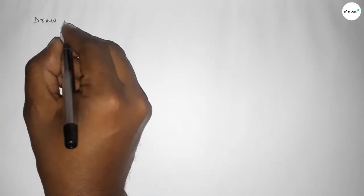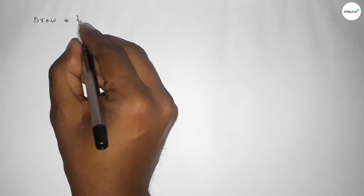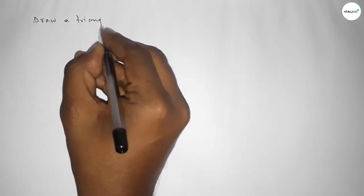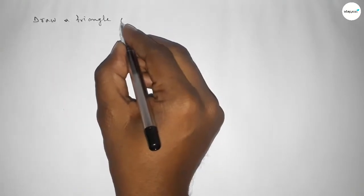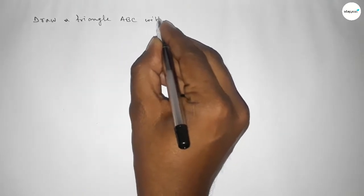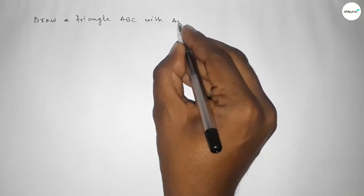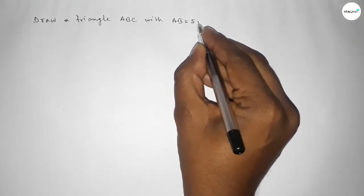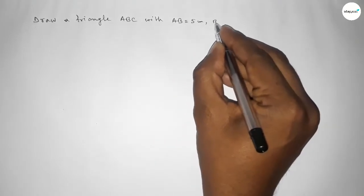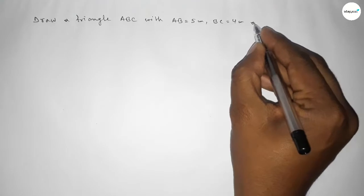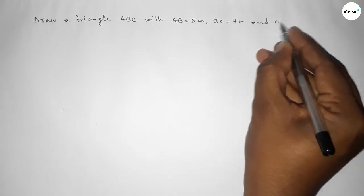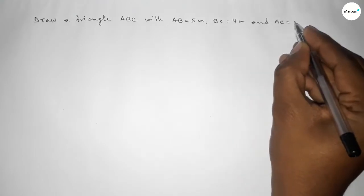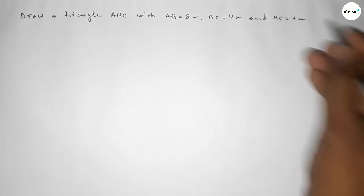Hi everyone, welcome to SI Share Classes. Today in this video we have to draw a triangle ABC with AB equal to 5 centimeter, BC equal to 4 centimeter, and AC equal to 7 centimeter. So let's start the video.